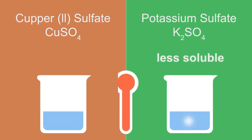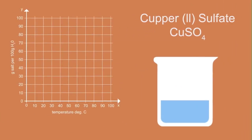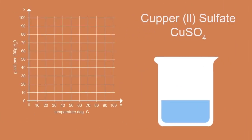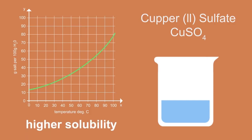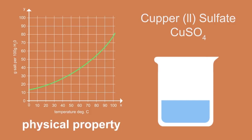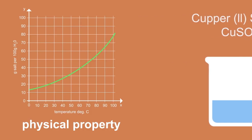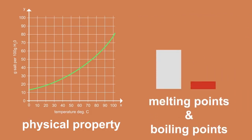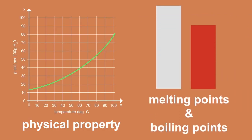In other words, CO2 sulfate has a higher solubility in water. This is actually a physical property of a substance, much like a substance's melting point and boiling point.